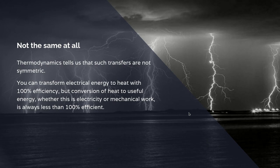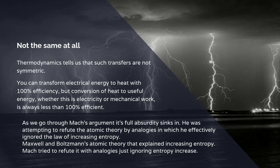But there is a huge difference between heat and useful energy. They're not all the same. Thermodynamics tells us that such transfers aren't symmetric. You can transform electrical energy into heat with 100% efficiency. But the conversion of heat to useful work, whether it's electrical or mechanical work, is always less than 100% efficient. That's the key teaching of thermodynamics. So, when you go through Mach's argument, its full absurdity sinks in. He's attempting to refute the atomic energy by analogies in which he effectively ignored the factor of the law of increasing entropy.